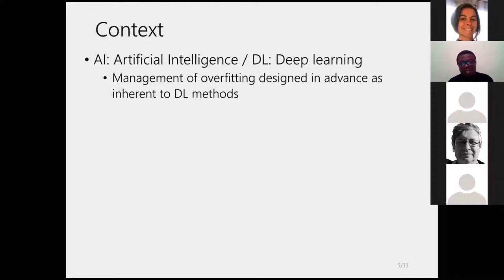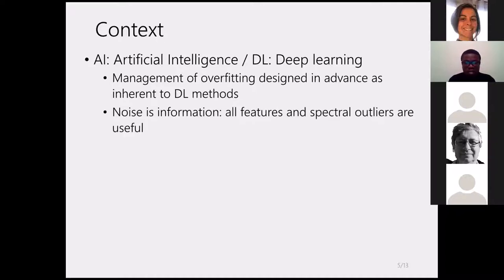Recently, artificial intelligence, particularly deep learning, has become a field in which methods are implemented to calibrate NIR measurements. Models designed in this field are taught how to manage overfitting, showing us that noise is also information. The outlier data we suppress in PLS can actually be useful, teaching the model to not learn from noise information.